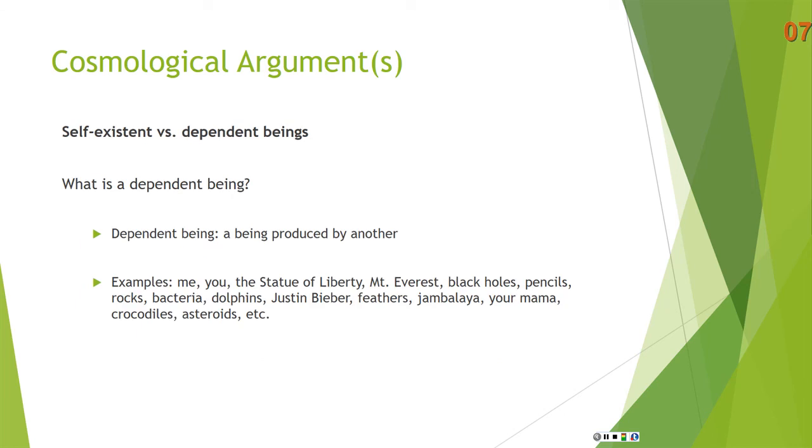What is a dependent being? It's something that is produced by another, in the words of Samuel Clark, a being that is produced by another. So examples, me, you, the Statue of Liberty, unless I'm talking to a self-existent being here, I think you are dependent. Mount Everest, black holes, pencils, rocks, bacteria, dolphins, Justin Bieber, feathers, jambalaya, your mama, crocodiles, asteroids, etc. These are all dependent beings, beings that are produced by another.